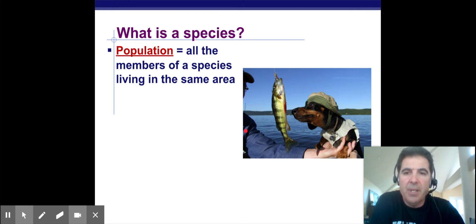It would be, for instance, all the dogs in Rockland, maybe all the fish in this lake that were this species of fish, maybe all the turkeys that are running around Rockland. They are a population because they're the same species.